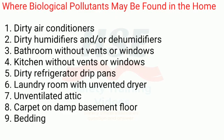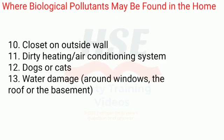Where biological pollutants may be found in the home: 1. Dirty air conditioners. 2. Dirty humidifiers and/or dehumidifiers. 3. Bathrooms without vents or windows. 4. Kitchens without vents or windows. 5. Dirty refrigerator drip pans. 6. Laundry room with unvented dryer. 7. Unventilated attic. 8. Carpet on damp basement floor. 9. Bedding. 10. Closet on outside wall. 11. Dirty heating/air conditioning system. 12. Dogs or cats. 13. Water damage around windows, the roof, or the basement.